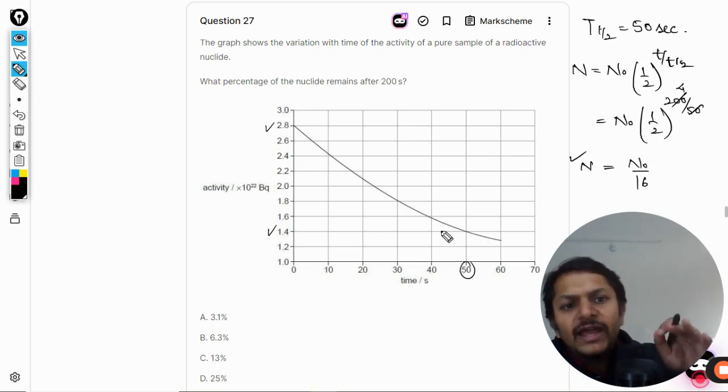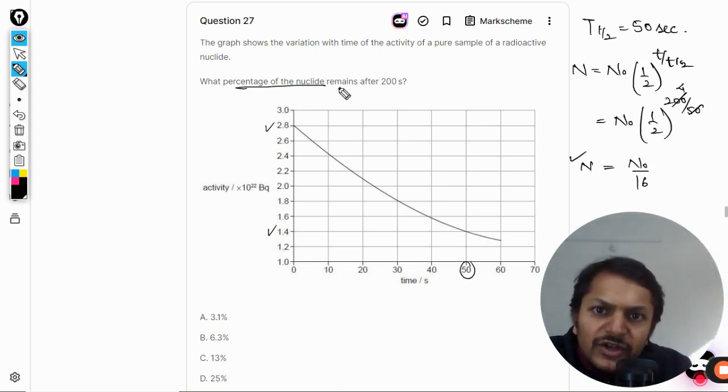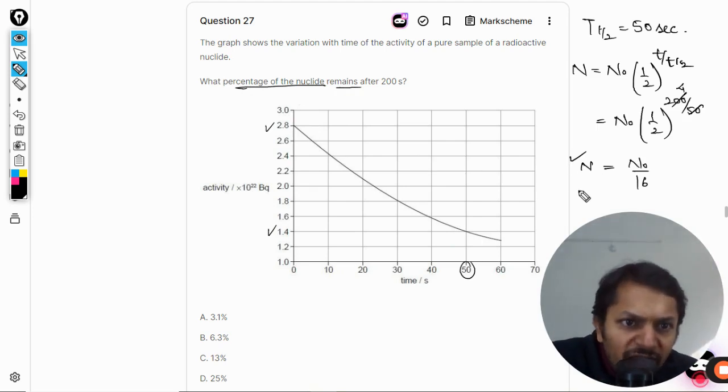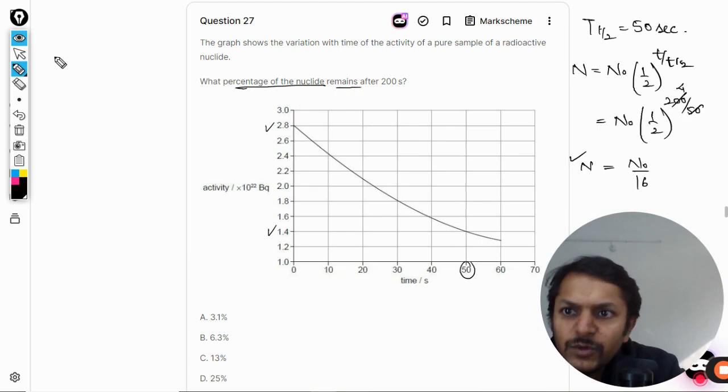So the percentage of the nuclei remaining in the sample we have to find. So this divided by N naught into 100. This is what we want to find.